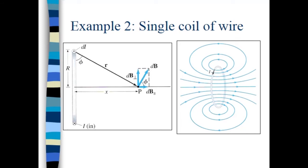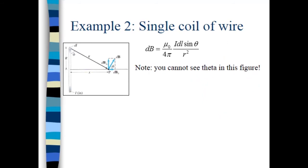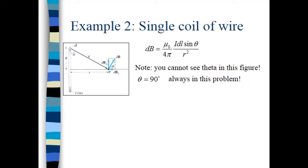Example number two: we want to determine the magnetic field due to a single coil of wire. As shown, magnetic field lines make circular paths around the wire. Using the right-hand rule, putting your fingers in the direction of the dL vector — which points out of the page — and waving them in the r-hat direction, the magnetic field points as shown. Looking at the Biot-Savart equation using theta as our variable, theta is actually 90 degrees here, so the equation simplifies.